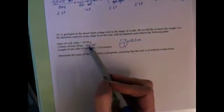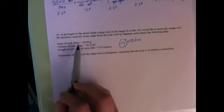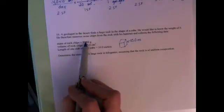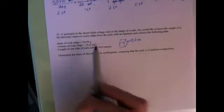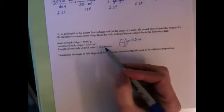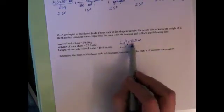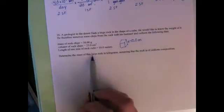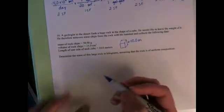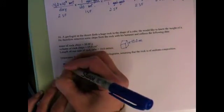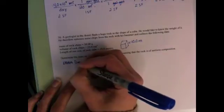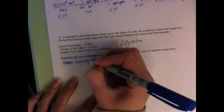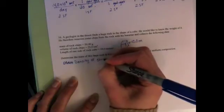So what you're going to do is use the smaller sample size for which you have the mass and the volume and determine the density for that small sample size. And then you're going to apply that to the big, whole big entire rock for which you can determine its volume but don't know its mass. So we're going to start by determining the density of the chips, the small sample.